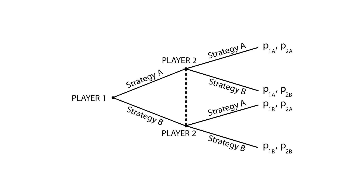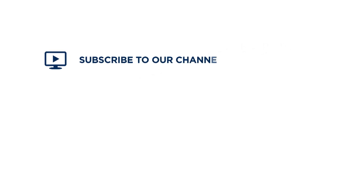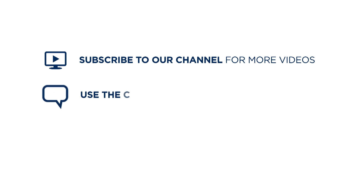In this case, player 2 will consider that any outcome is still possible. The extensive form is a useful graphical representation of sequential and simultaneous games. They can also be analyzed backwards, in order to understand each player's strategy starting from each different outcome.